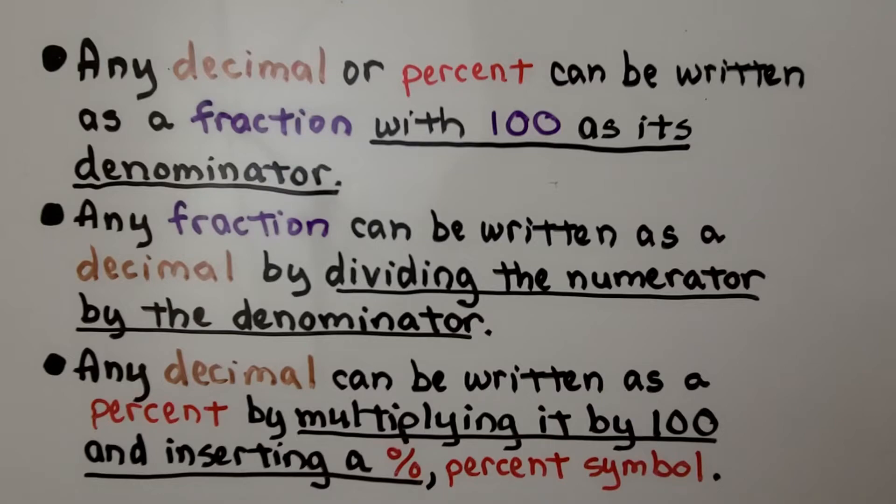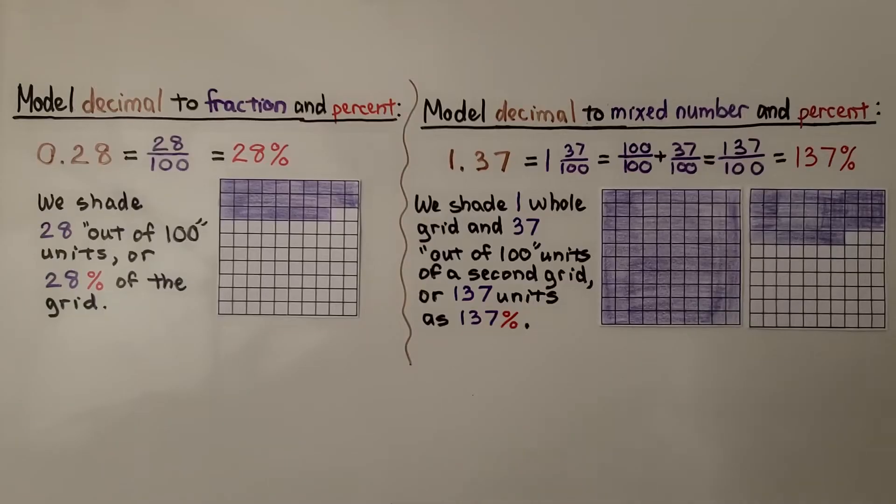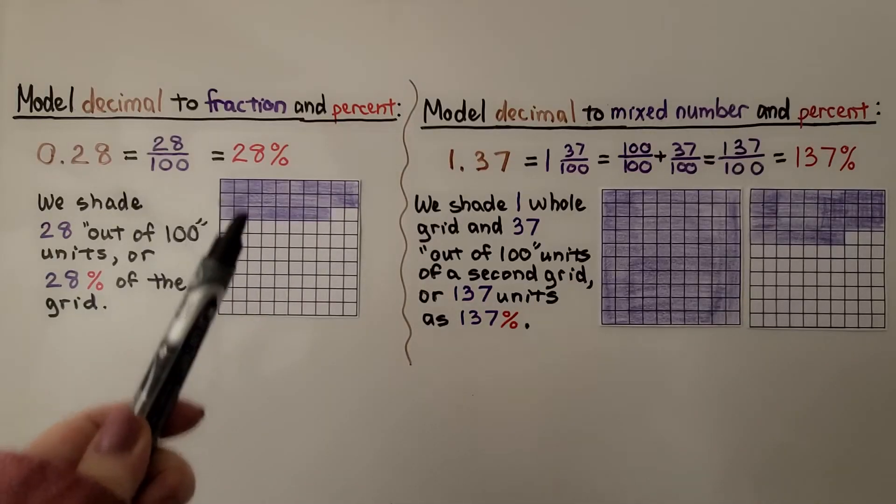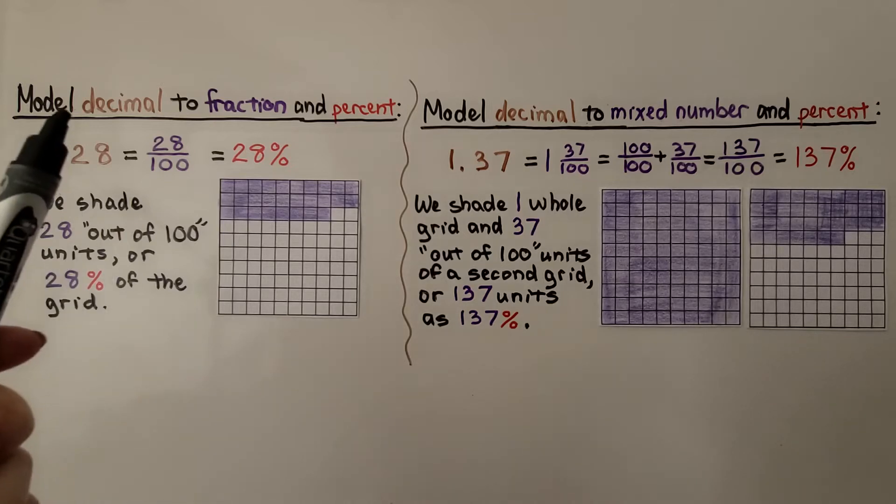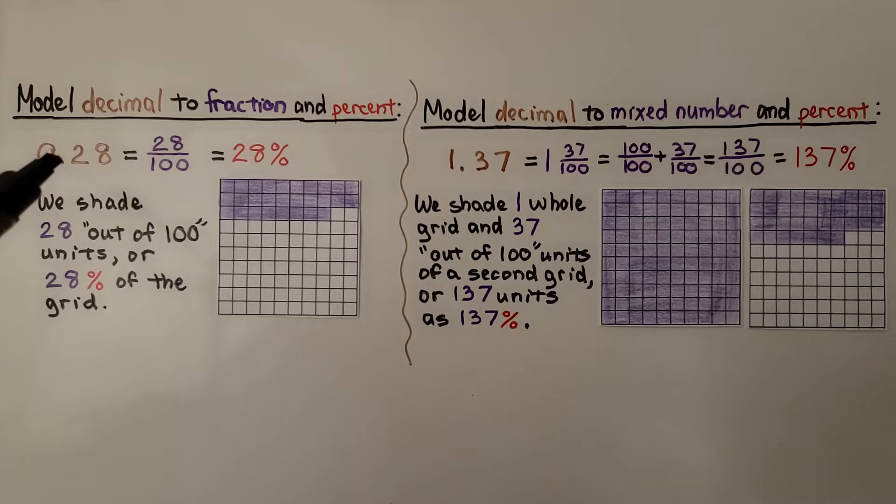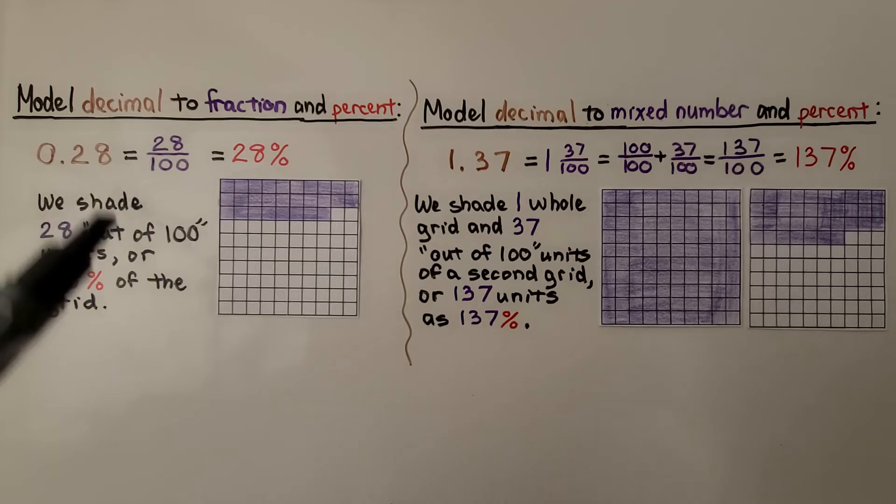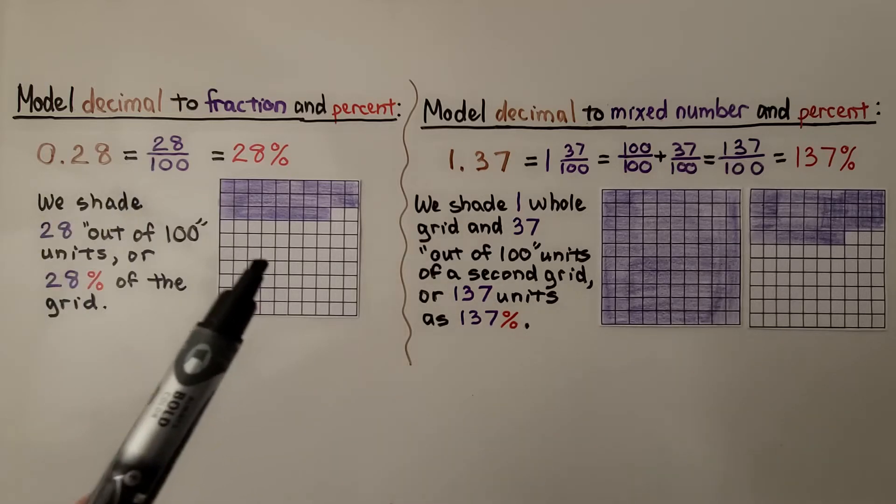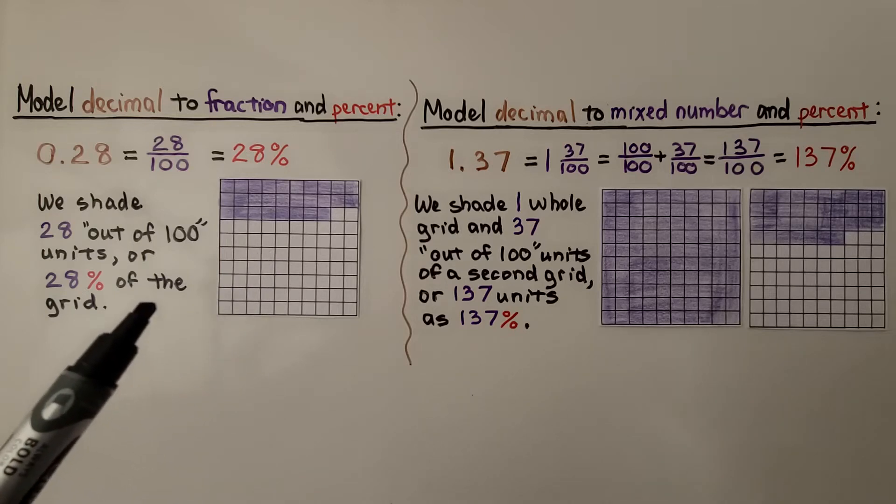So here we're using a 10x10 grid to model decimal to fraction and percent. We have 28 hundredths, which as a fraction is 28 for the numerator and 100 as the denominator. We shade 28 out of 100 units or 28% of the grid.